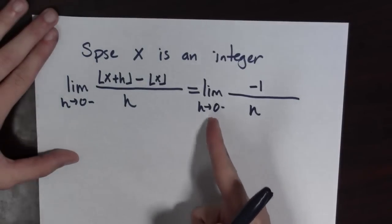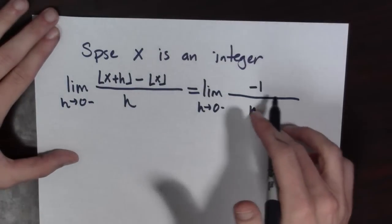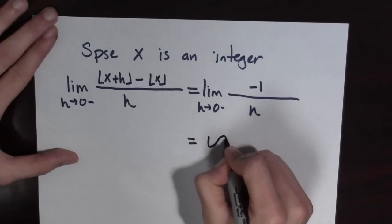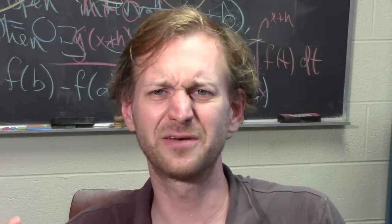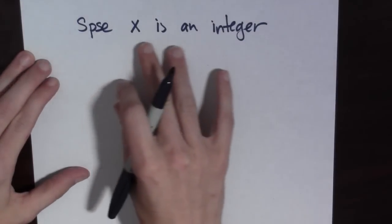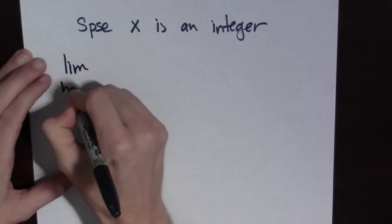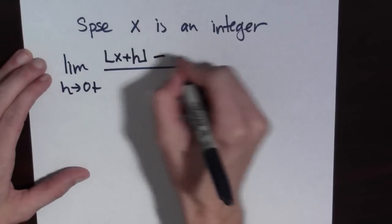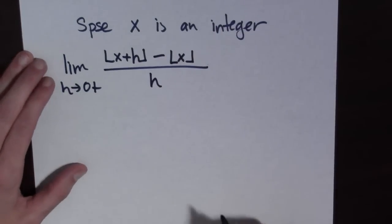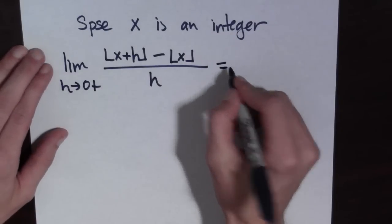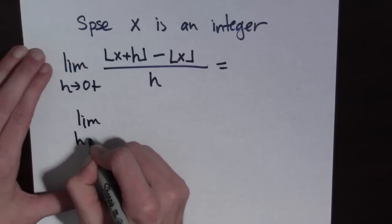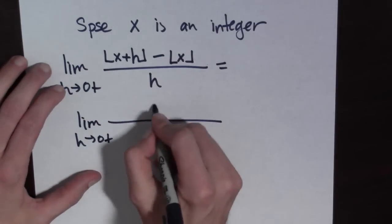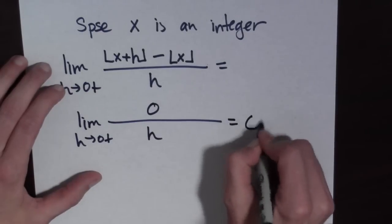Now what's going on here? If h is going to 0 from the left, that means h is negative. So if h is negative, this is a small negative number — a negative number over a small negative number — and so this limit is equal to infinity. But what about the limit from the right? Now again, suppose x is an integer. We're going to look at the limit as h approaches 0 from the right of the greatest integer less than or equal to x plus h, minus the greatest integer less than or equal to x, all over h. You can see that if it goes slightly to the right of x, it's going to be the same value as x. So this is 0 over h, which is equal to 0.